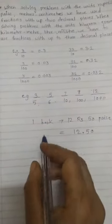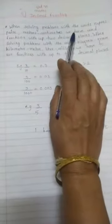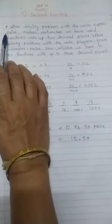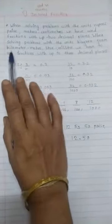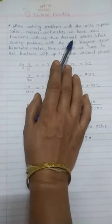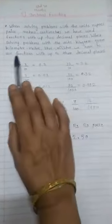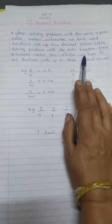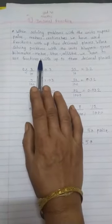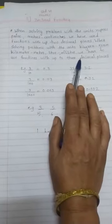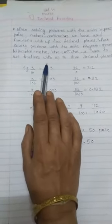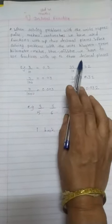Like this, when we are solving problems with the units rupees, paise, meters, centimeters, we have used the fractions with up to 2 decimal places. And when we are solving problems with the units kilogram, gram, kilometer, meter, liter, milliliter, we have to use the fractions with up to 3 decimal places.